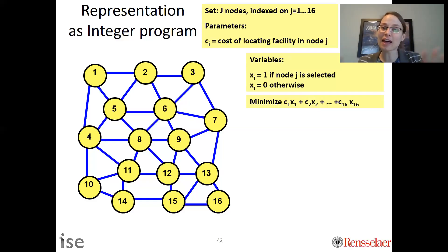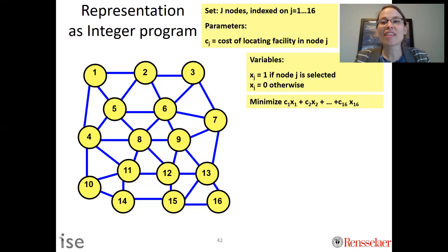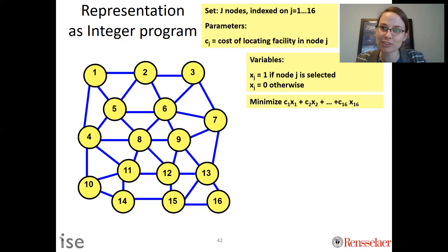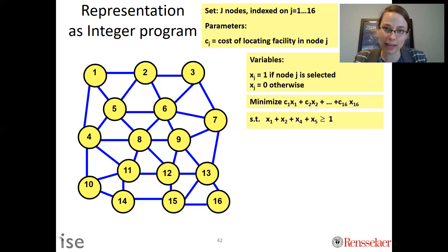If we only had the objective function with no constraints, the answer would be to set everything to 0 — don't build anywhere. That's not feasible because we do have constraints. We have constraints saying a fire station has to be in a neighborhood or adjacent to it. Specifically, the constraint says x_1 + x_2 + x_4 + x_5 ≥ 1.